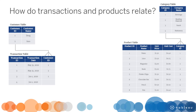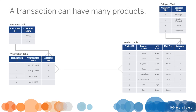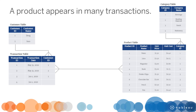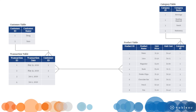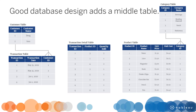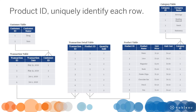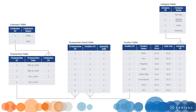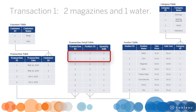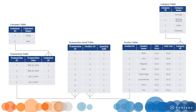How do transactions and products relate? A transaction can have many products, and a product can appear in many transactions — this is a many-to-many relationship. Since there is no common field between the two tables, good database design resolves this by adding a transaction detail table in the middle. Transaction ID combined with product ID uniquely identify each row, and the quantity sold is also recorded. The many-to-many relationship has been replaced by two one-to-many relationships.